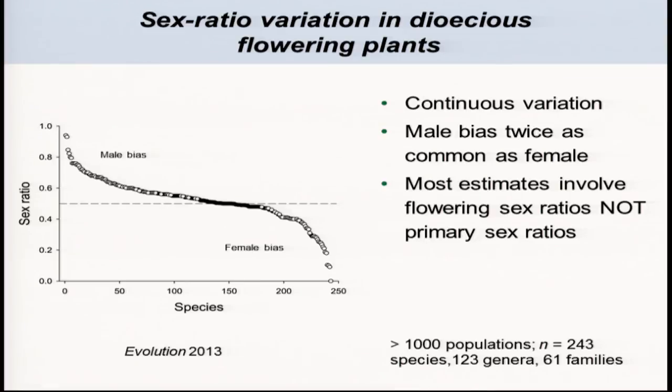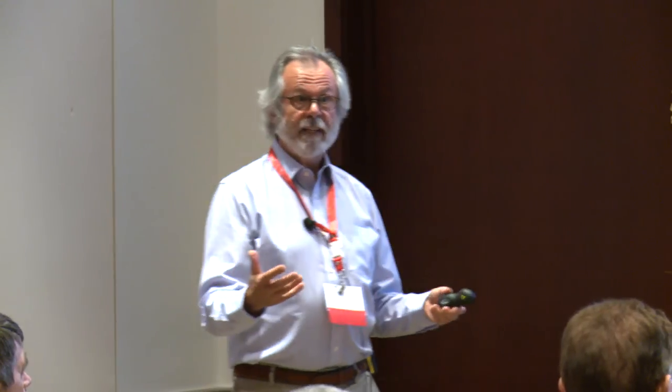Why do we have this strong male bias? A lot of it is simply that males flower more often than females, particularly in clonal species with repeated bouts of reproduction — often female genets take a few years off to build up resources to flower again. We get male-biased sex ratios primarily because males can flower before females, they usually flower at a smaller size, they flower more often, and females, particularly in clonal species, tend to suffer more gender-based mortality.